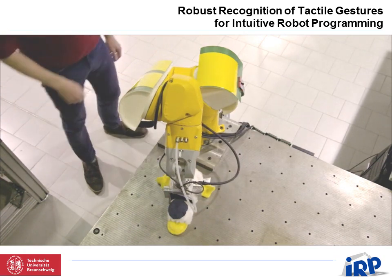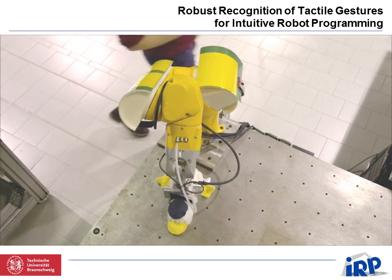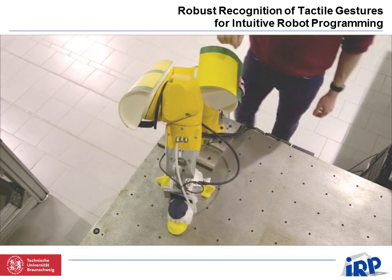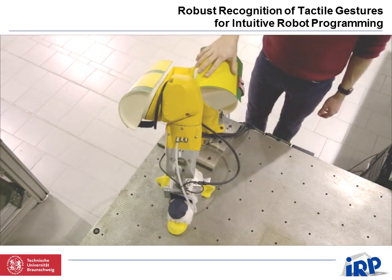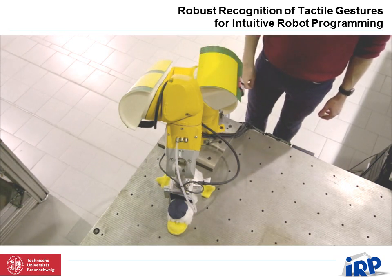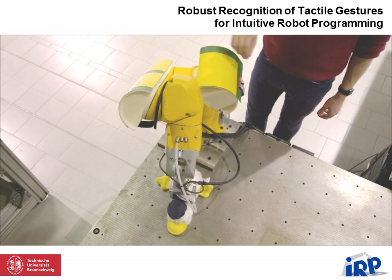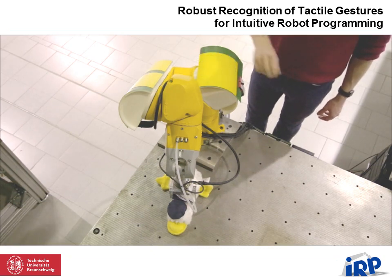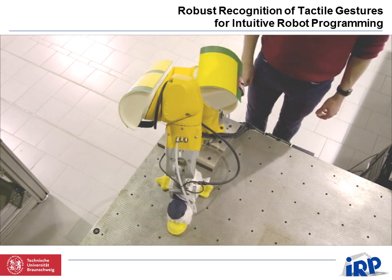Force-controlled grasps can be taught by two finger gestures. In the first grasp gesture, low forces are applied on the sensor, whereas in the second one, higher forces are exerted, thus tightening the grasp.